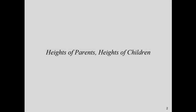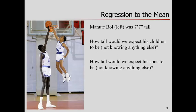We're going to start with a historical example that motivated people who were developing the ideas of correlation and regression — the heights of parents and heights of children. There's a picture of two basketball players: Muggsy Bogues and Manute Bol. Manute Bol, pictured on the left, was seven feet seven inches tall. How tall would we expect his sons to be, not knowing anything else? Very tall — at least six feet, maybe seven feet, as tall as Manute Bol?